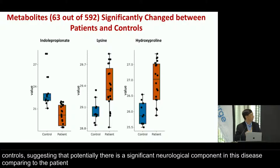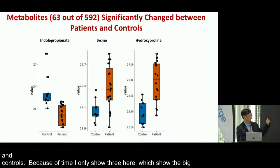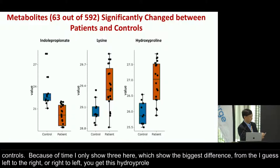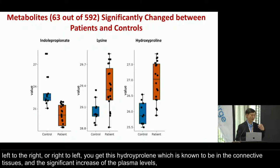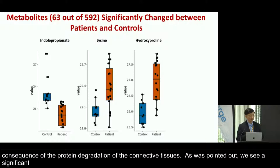Next we looked at metabolites, and out of almost 600 metabolites measured, about 10% showed significant difference between patients and controls. I'll show three with the biggest difference. Hydroxyproline is known to be significantly enriched in connective tissues, and the significant increase of plasma level of this amino acid might correlate with, or be a consequence of, protein degradation of connective tissues. We also see significant increases in lysine and many different amino acids, suggesting increased protein degradation in patients.